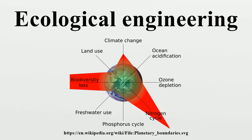Barrett offers a more literal definition: the design, construction, operation, and management of landscape and aquatic structures and associated plant and animal communities to benefit humanity and, often, nature. Other terms with equivalent or similar meanings include ecotechnology, soil bioengineering, and biotechnical engineering. However, ecoengineering should not be confused with biotechnology when describing genetic engineering at the cellular level, or bioengineering meaning construction of artificial body parts.